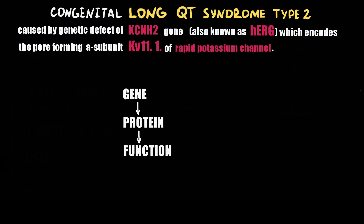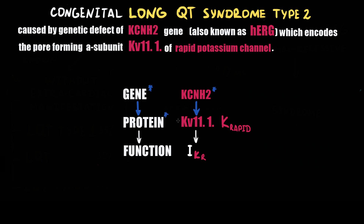Normally, the KCNH2 gene codes the KV11.1 protein of the rapid potassium channel, which provides outward rapid potassium current during phase 3 of the action potential. Therefore, if the gene is defected, the protein coded by this gene is defected too. As a result, we have loss of function of this protein, manifesting as a decrease in rapid potassium current.